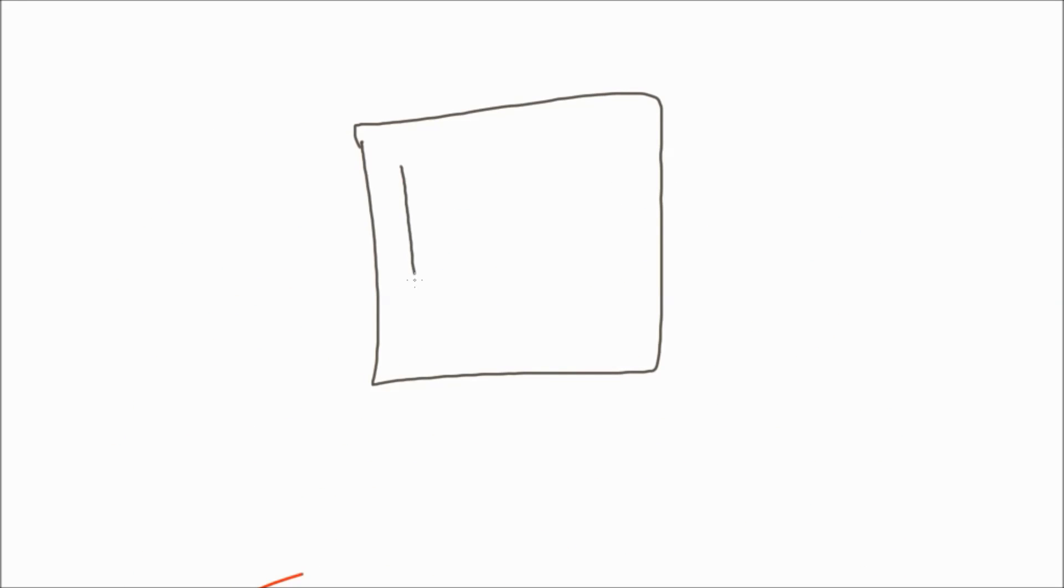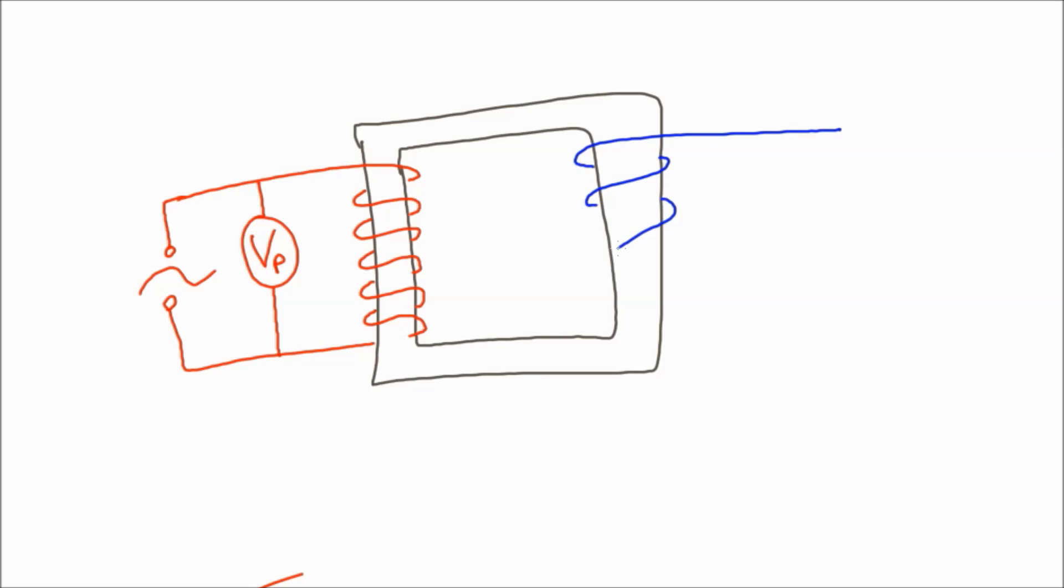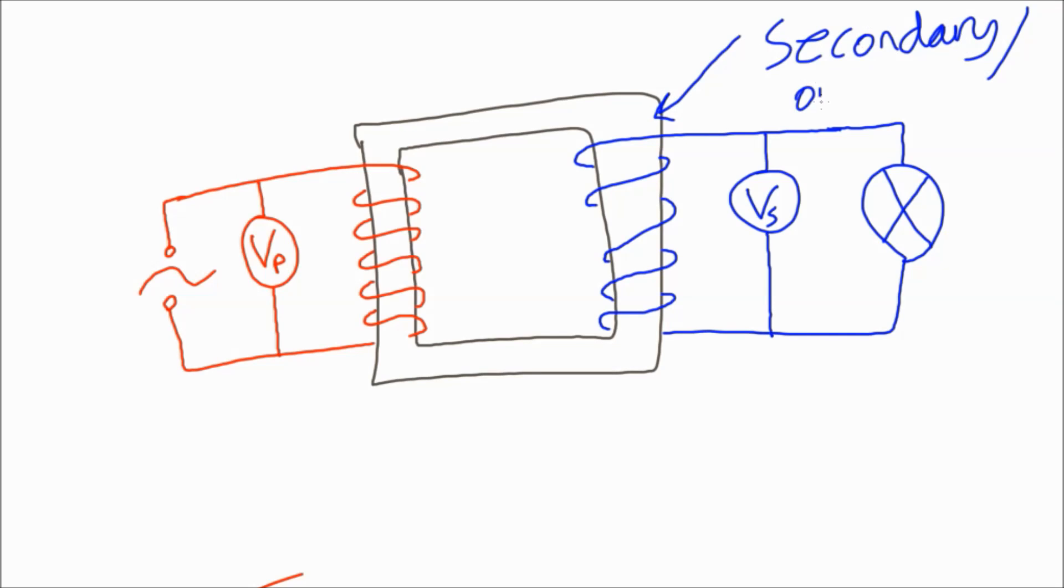The structure of a transformer is made of an iron core in the middle, a primary coil which is the one you connect to an AC power supply (that's the squiggly line), and a secondary coil which is connected to some load, some output load on the other side.